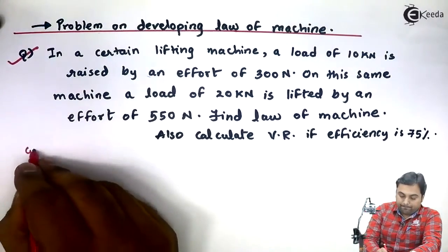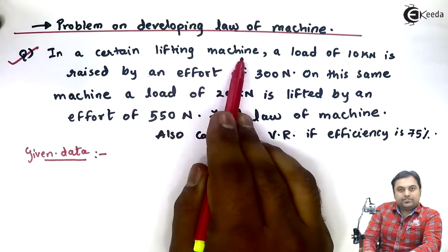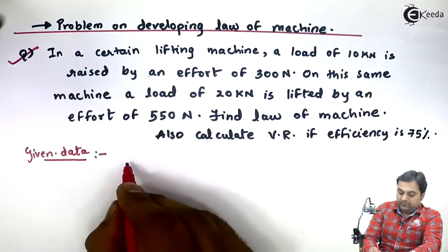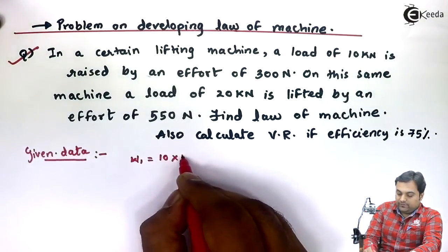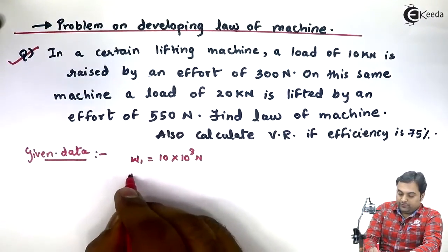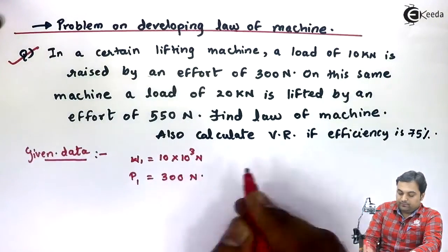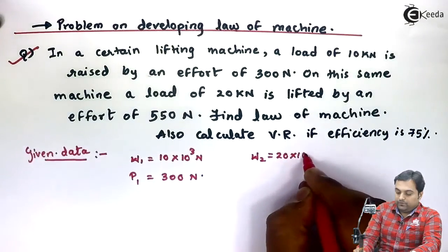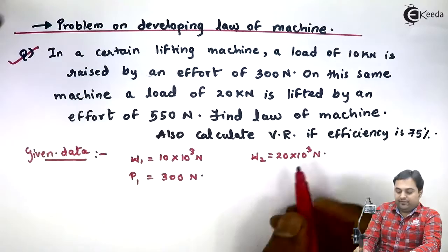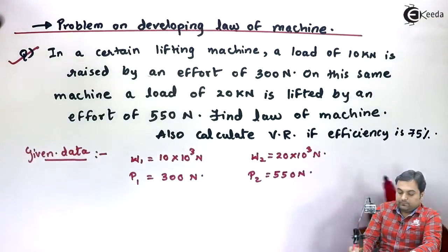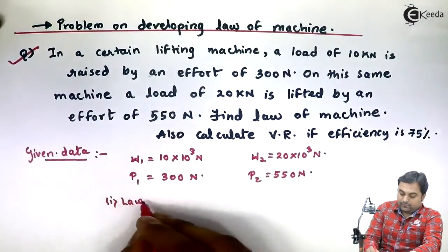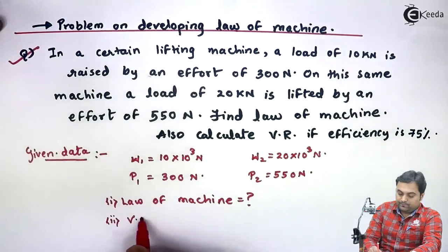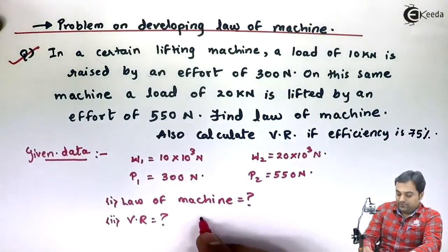Writing the given data: the first load W1 is 10 kilo Newton, that is 10 × 10³ Newton, raised by an effort P1 of 300 Newton. The second load W2 is 20 × 10³ Newton, lifted by an effort P2 of 550 Newton. Additionally, the efficiency is given as 75%, and we need to find the velocity ratio VR.